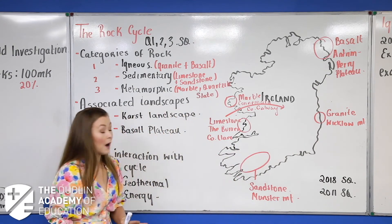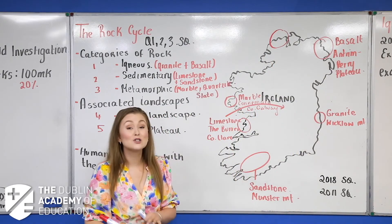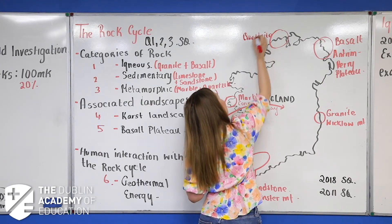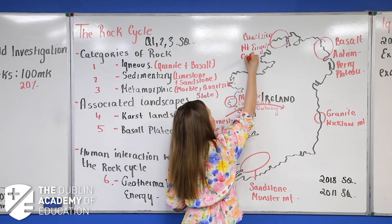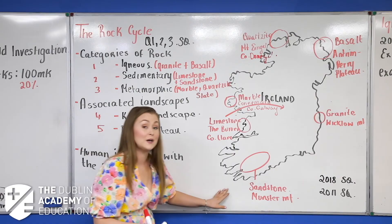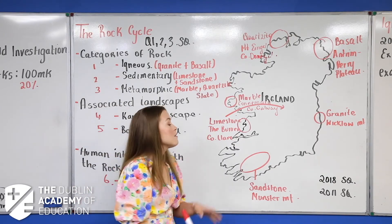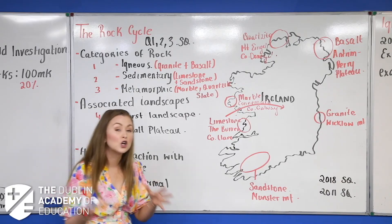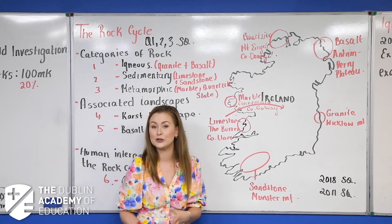The last one that has ever been asked is up here in Mount Errigal in County Donegal — quartzite. That came up in 2018 and 2011 for just four of them, giving you eight marks — a full short question. Make sure you learn this. They're not asking you to draw the map precisely; they will just point to an area and ask you for the rock type.